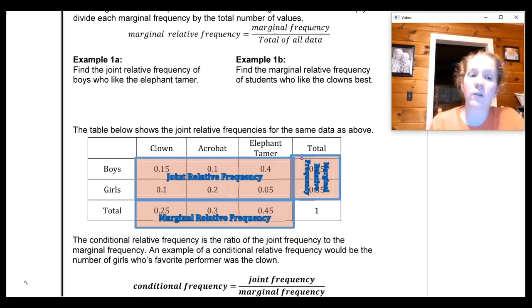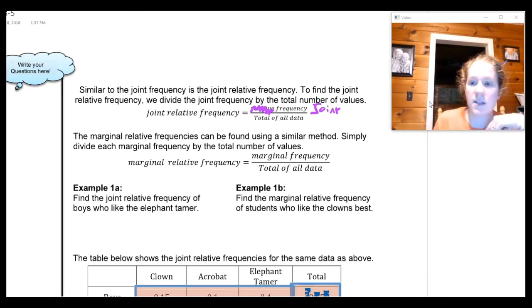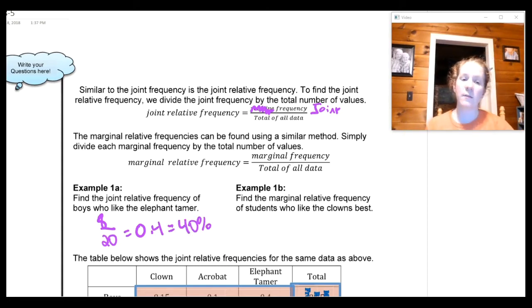This one says to find the joint relative frequency of boys who like the elephant tamer. That means I get to look at my total number of boys who like elephant tamers and divide by the total number of pieces of data. Going back to that original table, boys who like the elephant tamers, my total was 8. The total number of pieces of data is 20. So this is going to go 8 divided by 20. When I divide that I'm going to get 0.4. You may see this written as a decimal. Sometimes you'll see it written as a percentage, which means move it two decimal places to the right and that would be 40%. So 40% of the kids polled were boys who like elephant tamers.